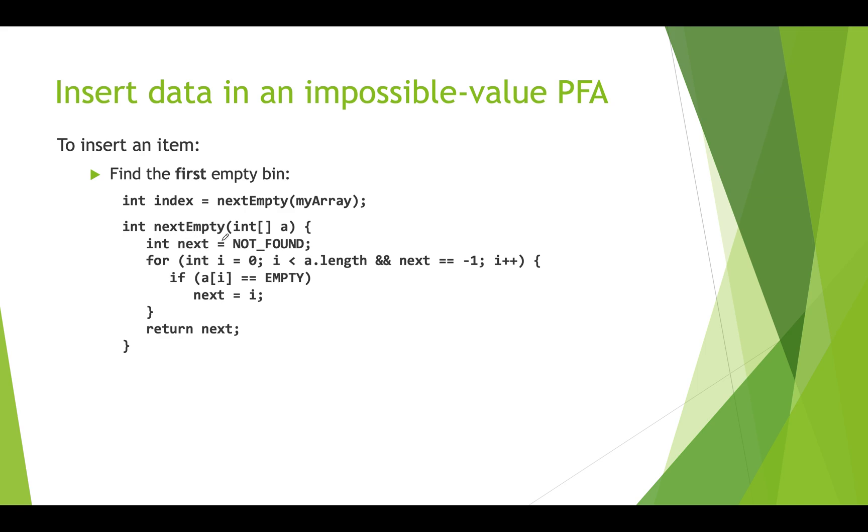First we're setting an int variable next to be NOT_FOUND. So again, this is our impossible value and we're going to iterate through the array from 0 up to the length of the array as long as next still is negative 1 or NOT_FOUND. And then we're going to look at each slot. If that slot is empty or negative 1, then we're going to actually set our variable next to be the index of that slot. And we won't keep on looping because now next won't be negative 1, it'll be an actual array index. So we'll sort of end this for loop and then we'll return that index value. If we get through this for loop and we never find an empty slot, then we're just going to return NOT_FOUND, which is negative 1. So we'll know that there isn't an empty slot. And once we're done coming back from this, we can then use the index we got and actually put new data into that bin.